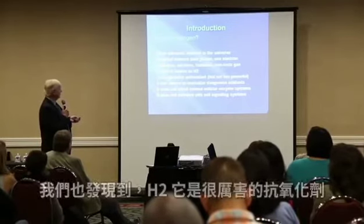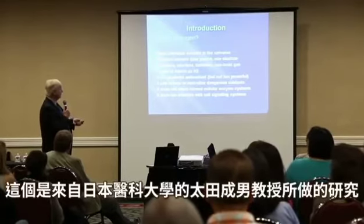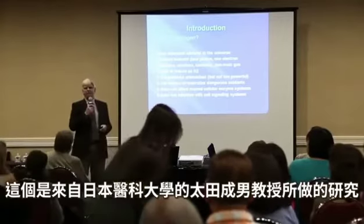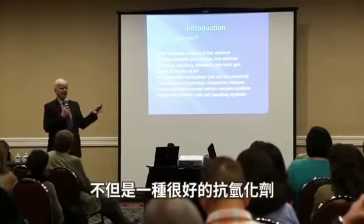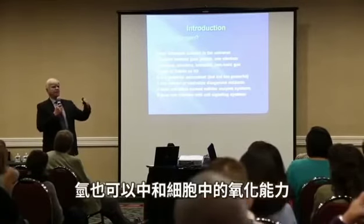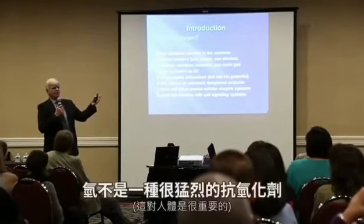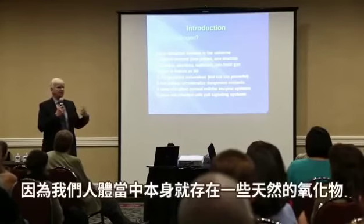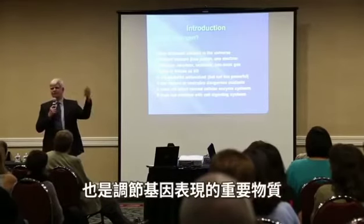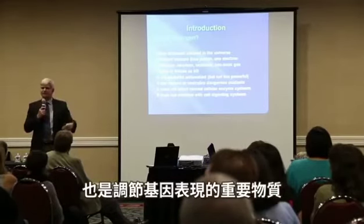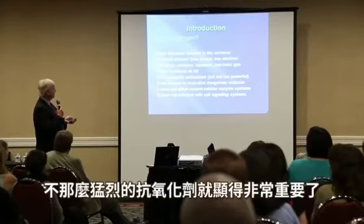H2 turns out to be a powerful antioxidant, but not too powerful. This was one of the principal findings made in Japan by Professor Ota. He found that not only was hydrogen an antioxidant — able to neutralize oxidative capacity in a cell — but it was not too powerful, because there are some very natural oxidants in our cells which are important for signaling and regulation of gene expression. So it's important that an antioxidant is not too powerful.